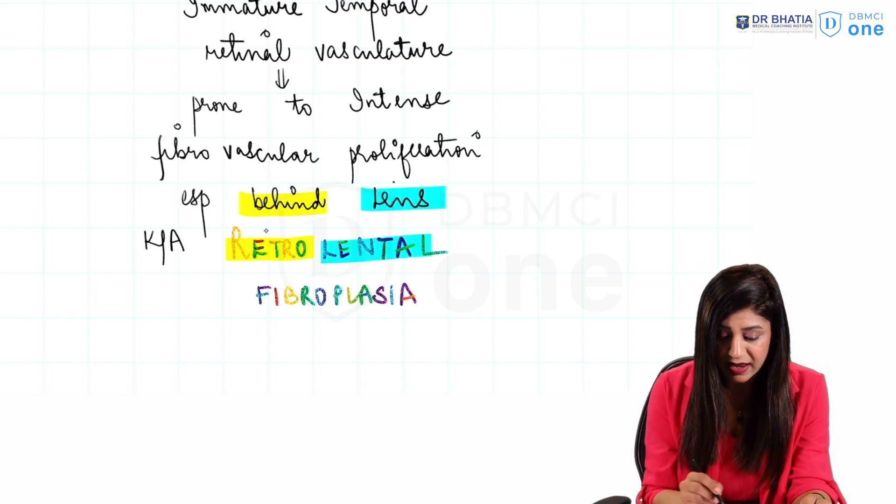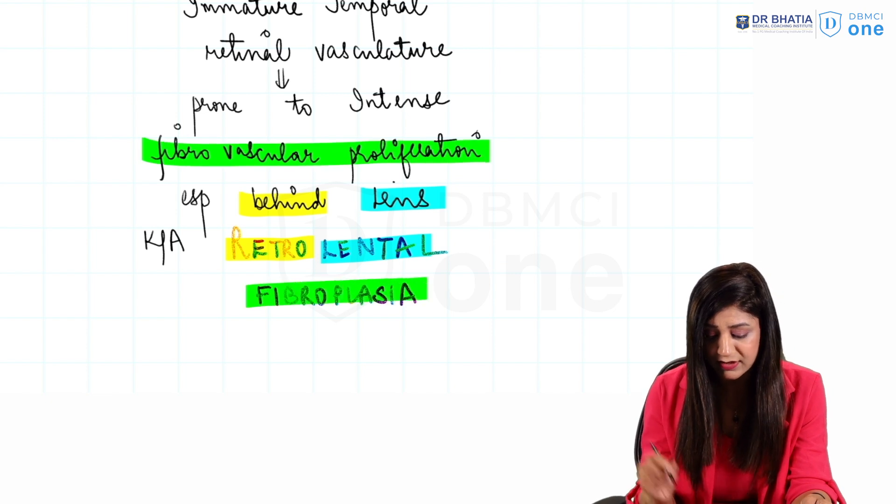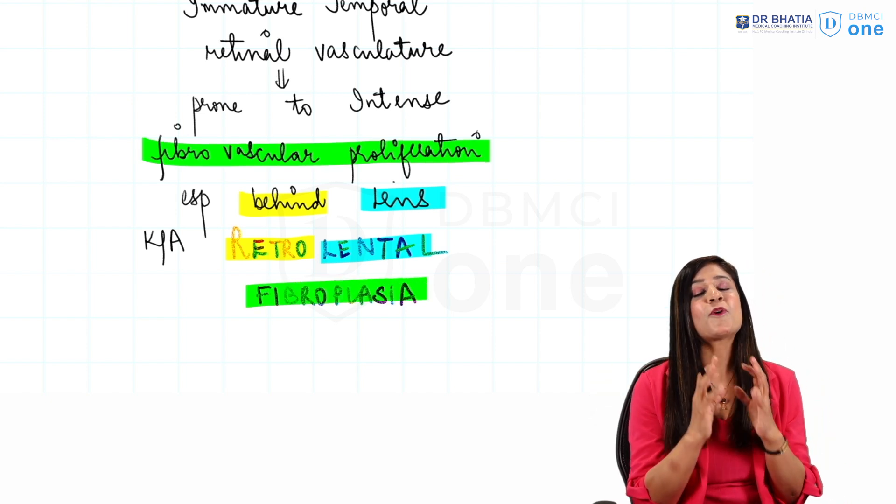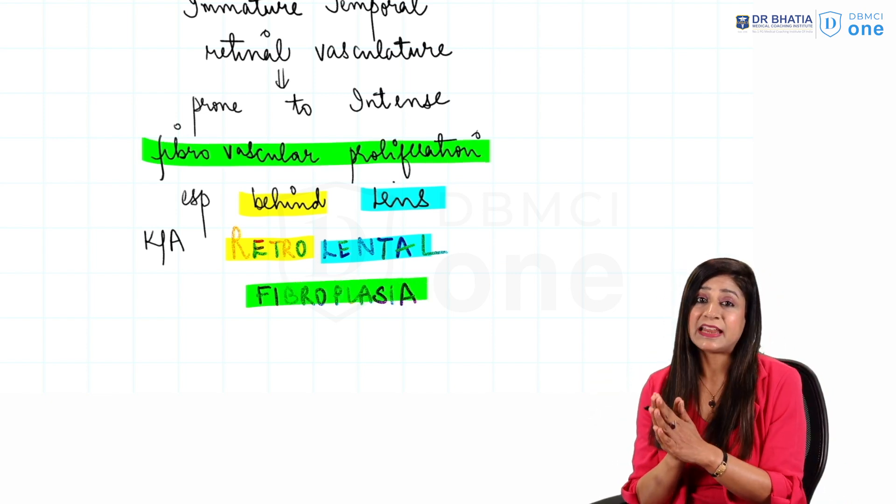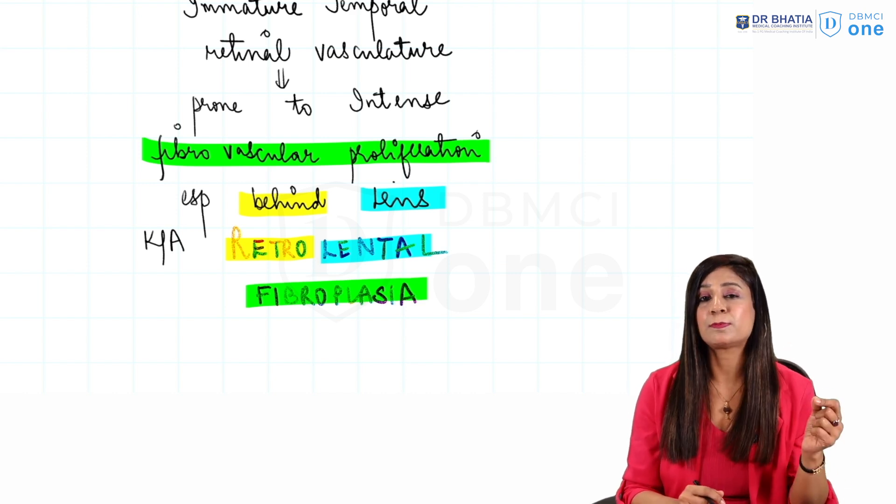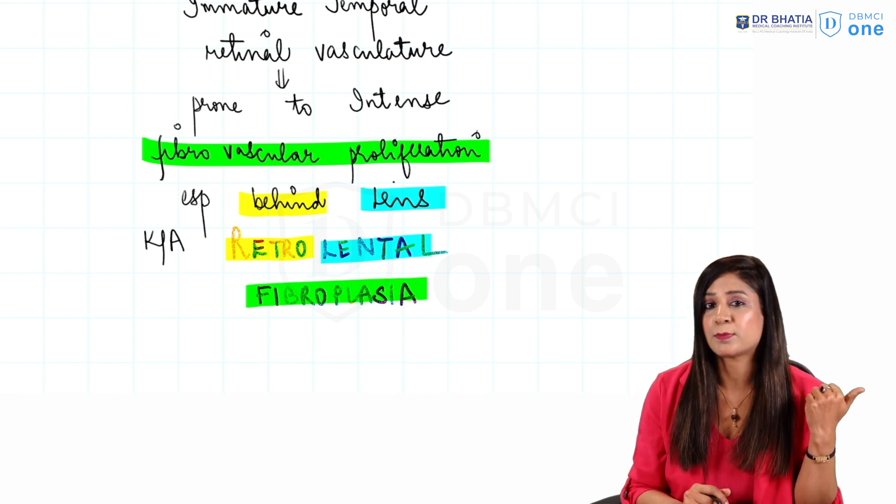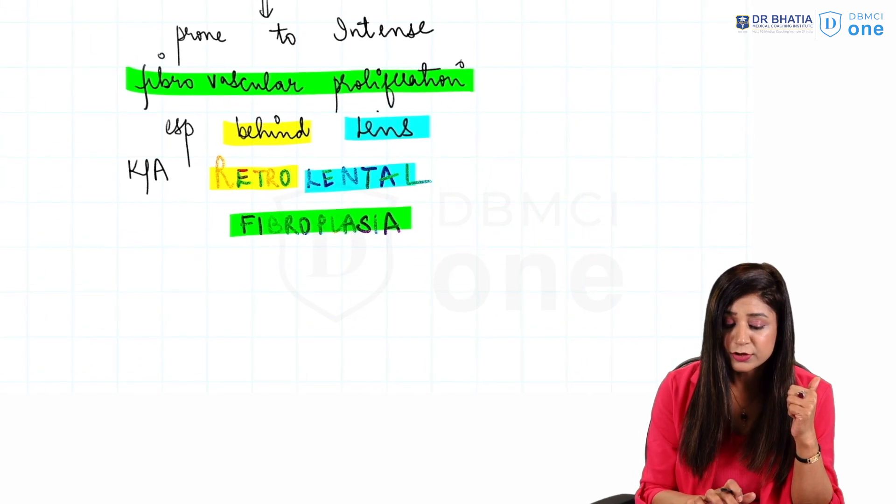Then we have lentil, lentil is lens, and then we have fibrovascular proliferation, that is fibroplasia. So it is appropriately named. And this is the old name retrolentil fibroplasia, which is now also called as retinopathy of prematurity. Now this